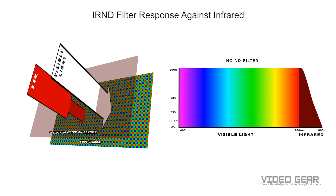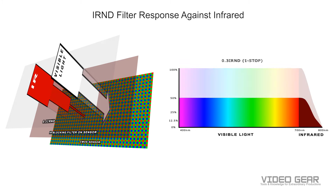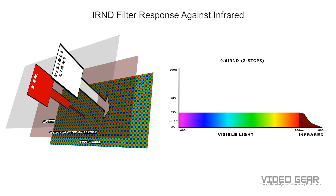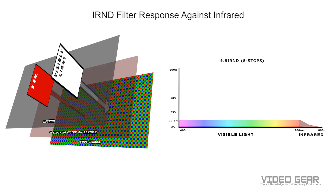In contrast, IR ND filters decrease light in both visible and infrared parts of the spectrum. Now if we look at how an IR ND filter works, we see that the visible and infrared light are decreased the same amount — from one stop, to two stops, to three stops, all the way down to six stops. With this type of filter, the camera's infrared blocking filter is typically enough to avoid any issues with IR pollution.